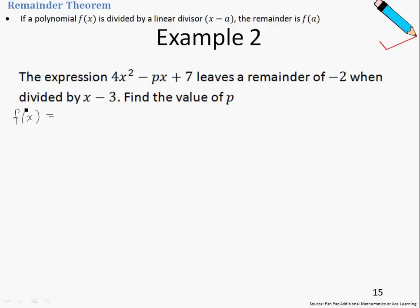So f(x) denotes a function of x and I'm going to let f(x) be the given expression. The next thing we're going to do is interpret what it means by it being divided by x-3. So recall that the remainder theorem says that if a polynomial f(x) is divided by a linear divisor x-a, then the remainder is f(a). In this case, the divisor is x-3.